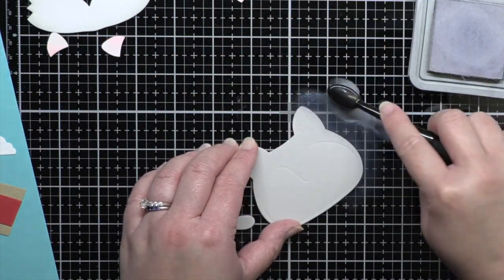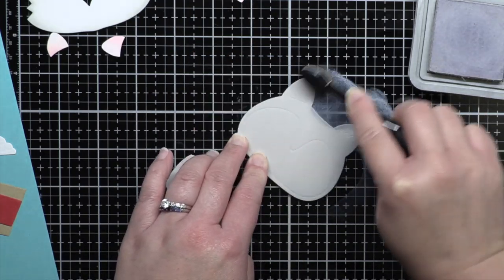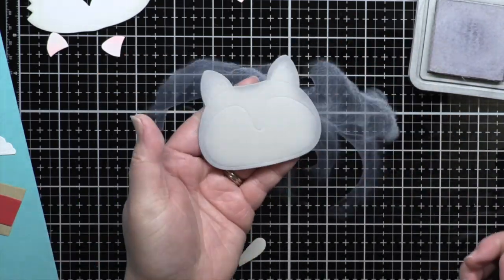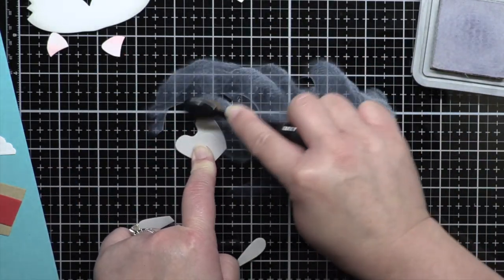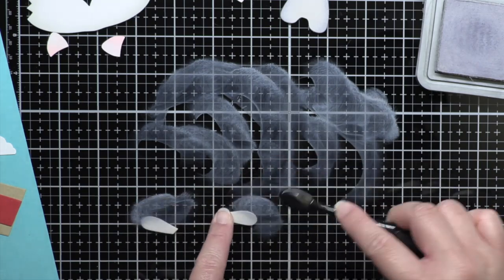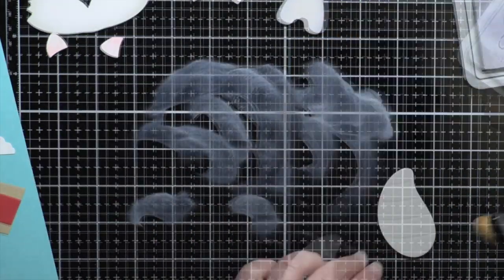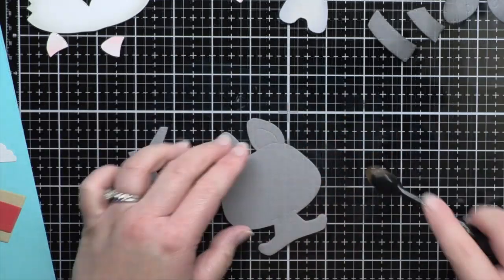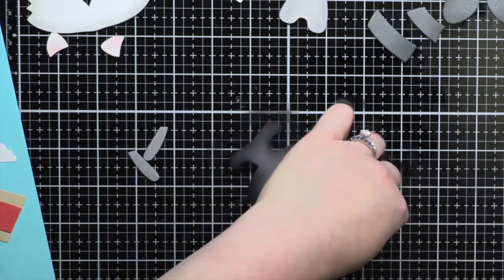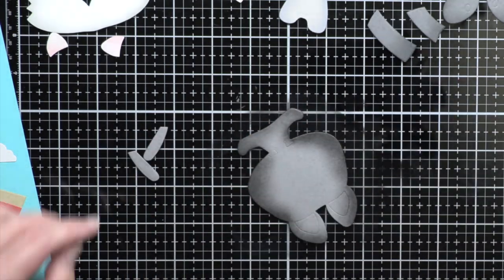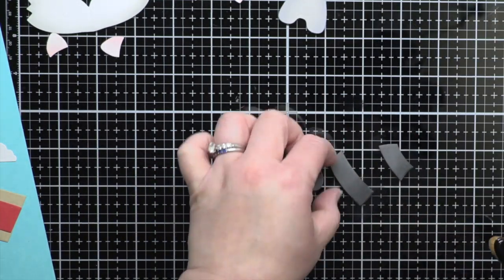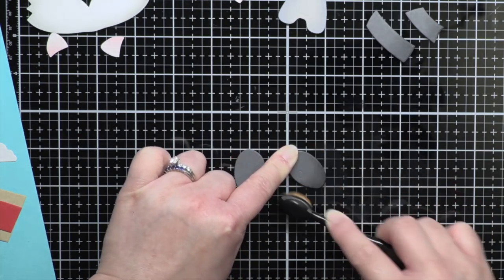Then I added Hickory Smoke to the Cement Gray Cardstock on the raccoon's body. Next, I added just a touch of Black Soot to the Gravel Gray Cardstock for the fox's body. I also added a slightly heavier hand of Black Soot to the steel gray cardstock for the raccoon's tail and eye mask.